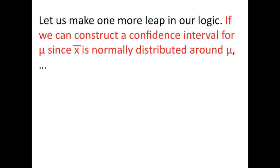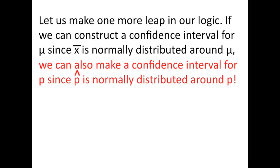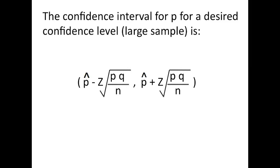Let's make one more leap in our logic. If we can construct a confidence interval for mu, since x bar is normally distributed around mu, then we can also construct a confidence interval for p since p hat is normally distributed around p. Here is the formula for the confidence interval for p with p hat normally distributed around p. Don't pass out. This really isn't that bad. You have p hat values. You have a z score. Of course, this is a large sample. And the z score is determined by the level of confidence you want. And then you have the standard deviation on both sides of the p hat distribution, which is the square root of p times q over n.